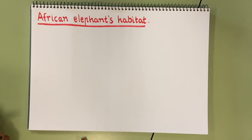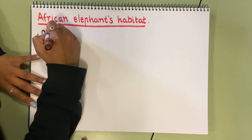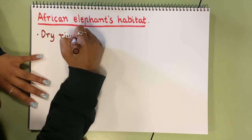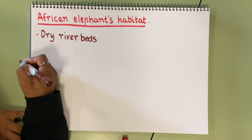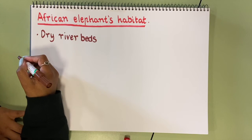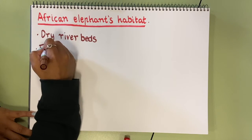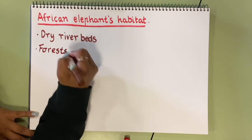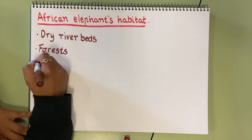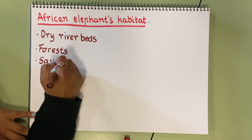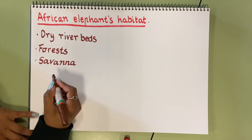After searching on the internet I found three different habitats that elephants stay in. The first one is called a dry riverbed, which is more in the drier sides of Africa. The second one is a forest, so this could be a rainforest. The last one I found was called a savannah, and a savannah is a desert area.